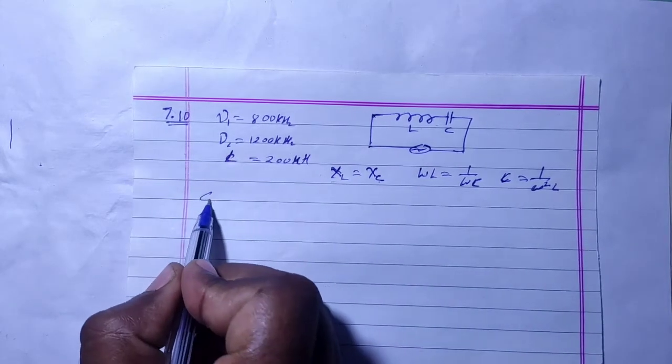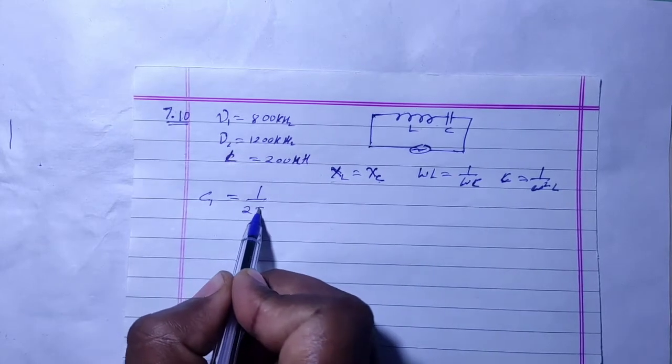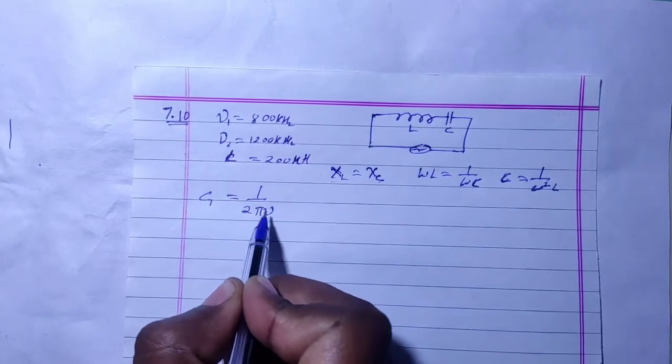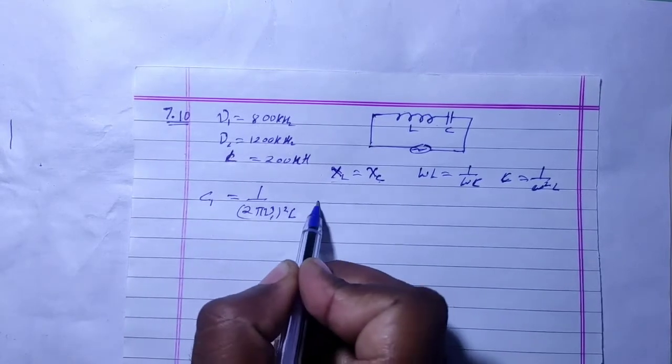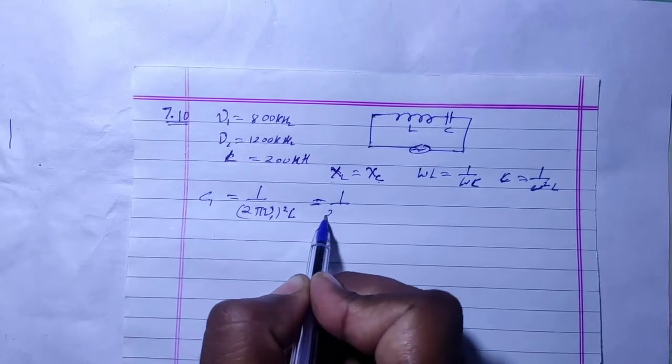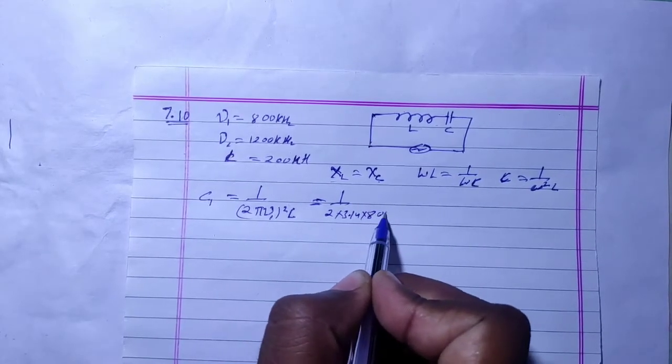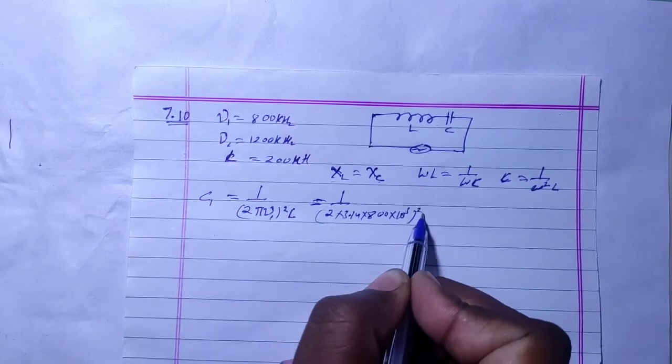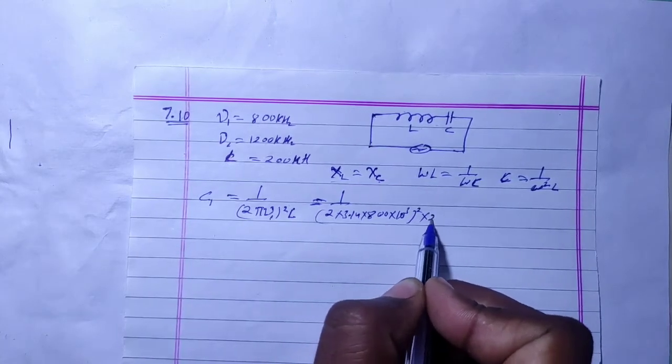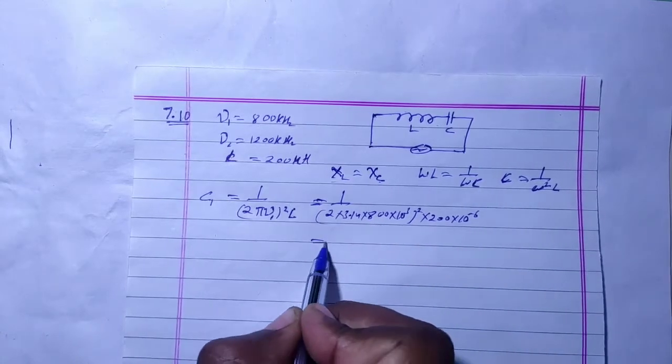If I calculate C1 for first frequency, then what is omega? 2 pi nu. This is equal to 1 by 2 pi nu whole square into L. This is equal to 1 by 2 into 3.14 and frequency is 800 kHz, 10 to power 3, whole square into L which is 200 micro, or 10 to power minus 6.